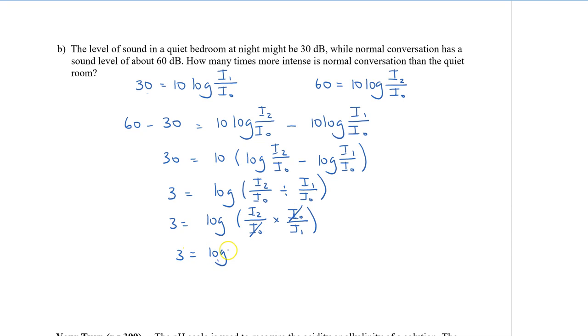So the i₀ cancel off. So we have 3 is equal to log i₂ divided by i₁. Now we actually want to know what this expression is because that tells us how many times i₂ is more than i₁. So to do that, we are going to rewrite this expression in exponential form. Remember, it has a base of 10. So therefore, i₂ divided by i₁ is equal to 10 to the power of 3, which means that it's going to be 1,000 times greater or more intense that normal conversation is than a quiet bedroom.